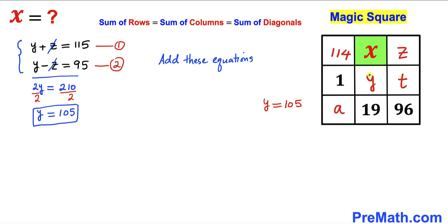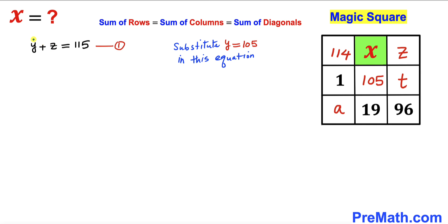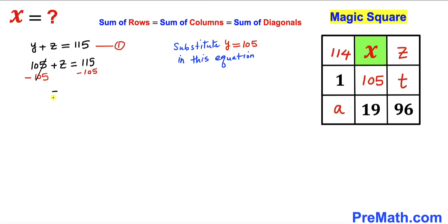So our y value turns out to be 105. Now let's substitute y with 105 in equation one. This gives us 105 plus z equals 115. Subtracting 105 from both sides, our z value turns out to be 10.